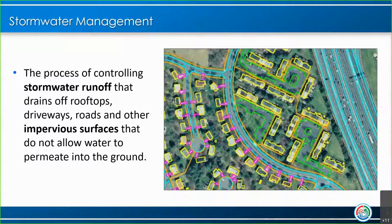Stormwater management — that's what my department focuses on. This is the process of controlling stormwater runoff that drains off rooftops, driveways, roads, and other impervious surfaces that do not allow water to permeate into the ground. Impervious surfaces are any hard surfaces like sidewalks, parking lots, roads, highways, buildings, and houses. Everything outlined by a color in this graphic is an impervious surface — you'll see parking lots, roads, a major highway, townhouses, and then green areas where water is able to soak into the ground.